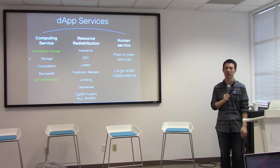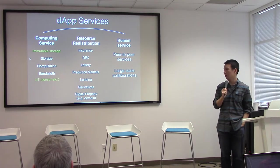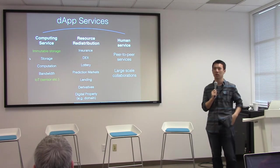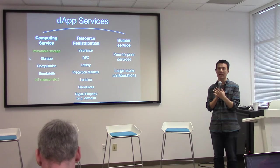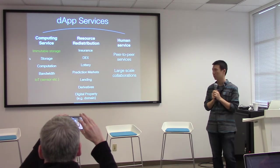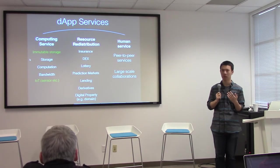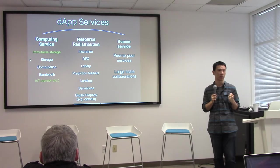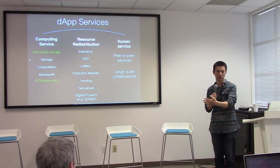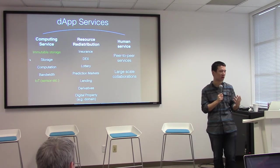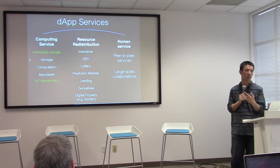A couple of examples of what dApps can do. On the computing side: immutable storage, computation, bandwidth, and Internet of Things. In the middle, you have resource distribution, which is a big part of peer-to-peer economy since it usually involves transactions. So you have marketplace types of things: insurance, stock exchange, lottery, prediction markets, lending, derivatives, digital properties, et cetera. You also have exchange of human services. The challenge of human services, so far, is the cryptographic proof — how do you prove someone actually came to your home and cleaned it? That's a much harder problem. With IoT, I think you'll be able to solve some of that as well.